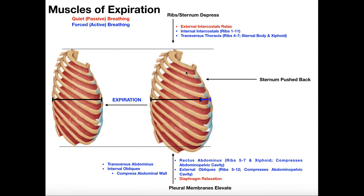For forced expiration, I have to make the thoracic cavity even smaller than it was. I need to bring it down in size so that the pressure goes up more and I can blow more air out. I have to depress the ribs and sternum, push the sternum posteriorly, and get the pleural membranes back up — all of those things decrease the size of the thoracic cavity. We still have relaxation of the diaphragm and the external intercostals, but we have other muscles contracting.